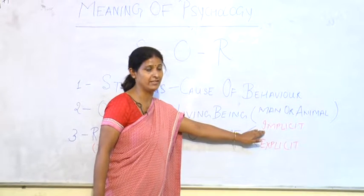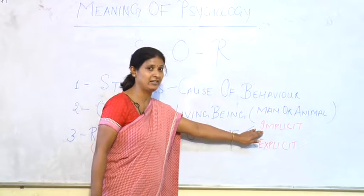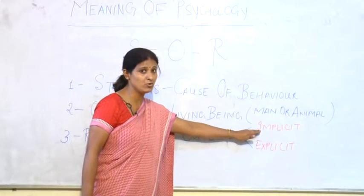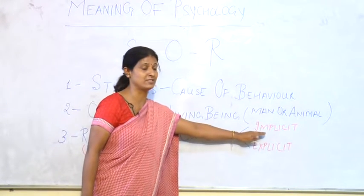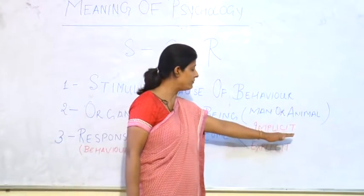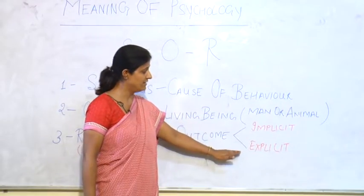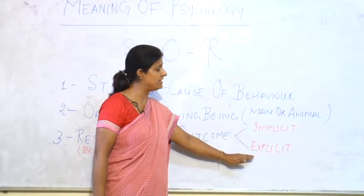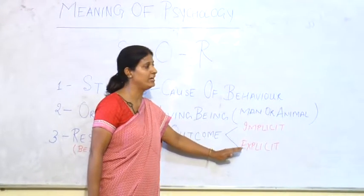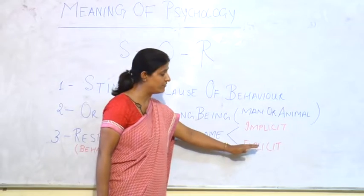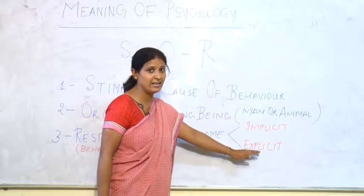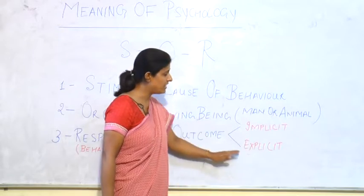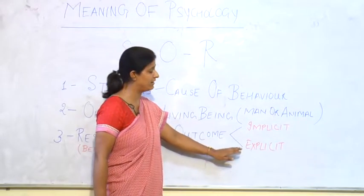Implicit behavior cannot be seen directly — like our curiosity, our feelings, our emotions. These are internal processes, also called cognitive behavior. The second type is explicit behavior, which we see directly — like our eating, working, writing, listening — these are directly measured and directly observed.